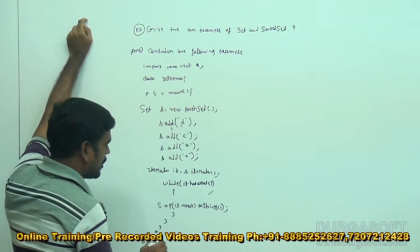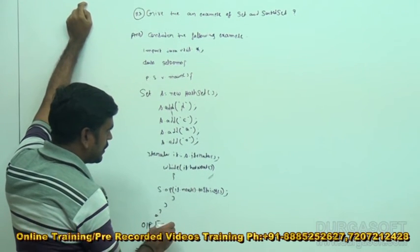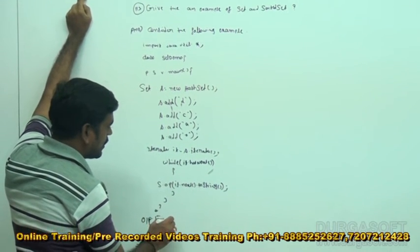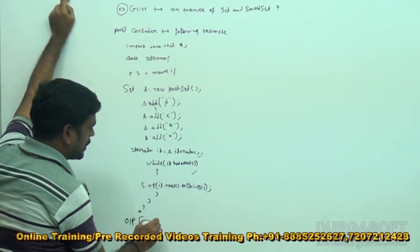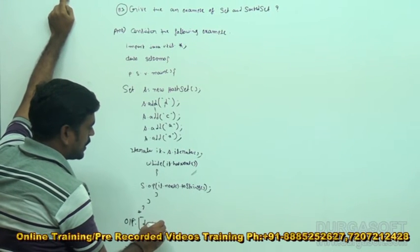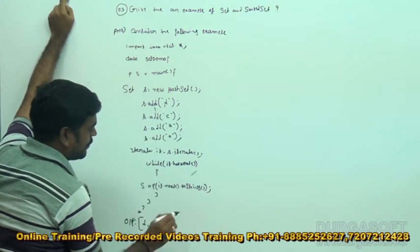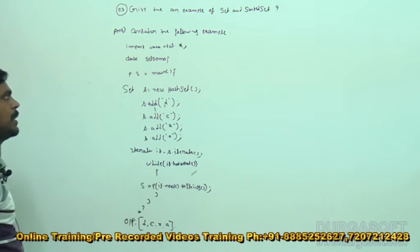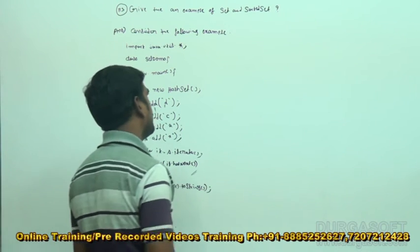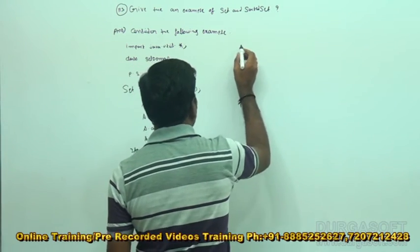So it is going to be displaying: D, then C, then X, then A — like this it is going to be displaying. Whereas sorted set — now the same program I am going to be designing by using sorted set.